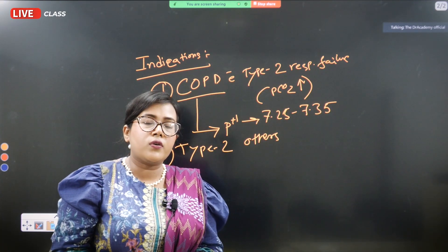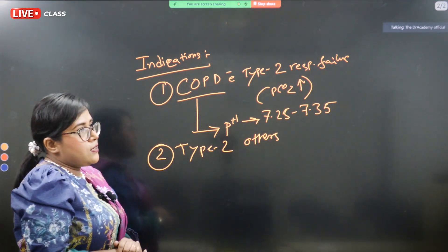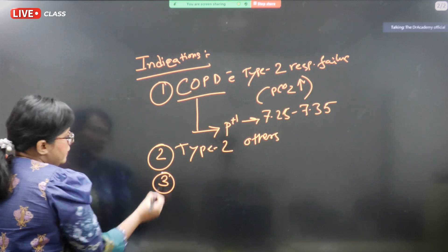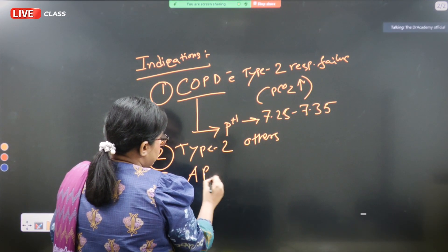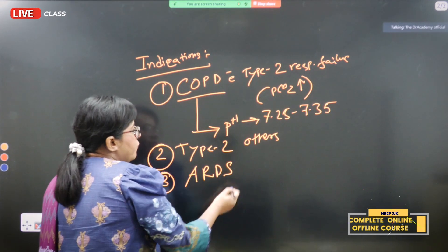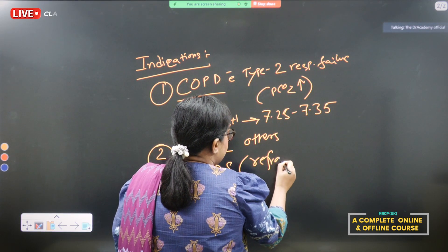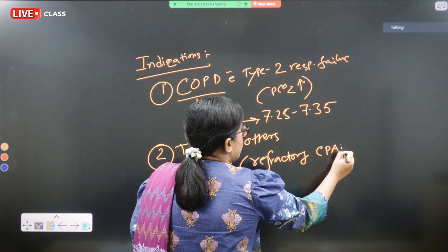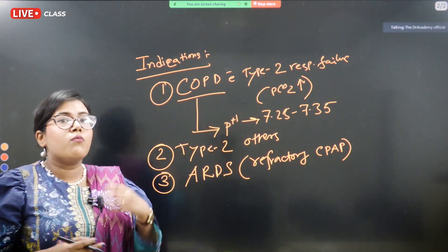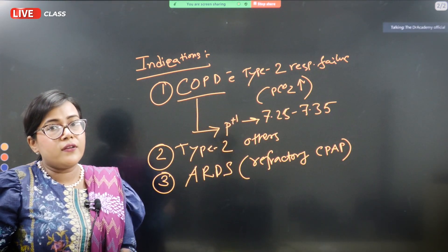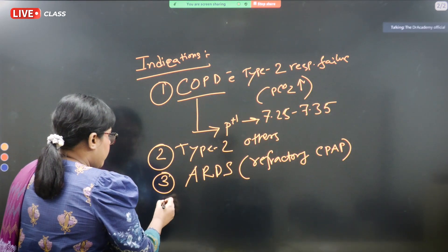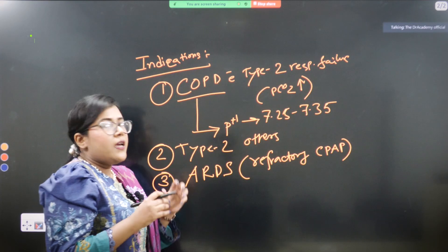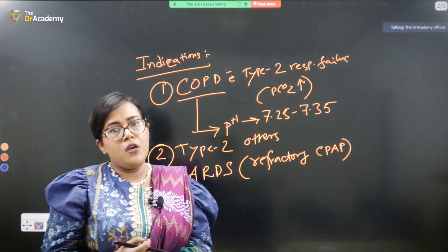Number three is in ARDS patient if they are refractory to CPAP. So BiPAP is needed in a bit more severe condition rather than CPAP.